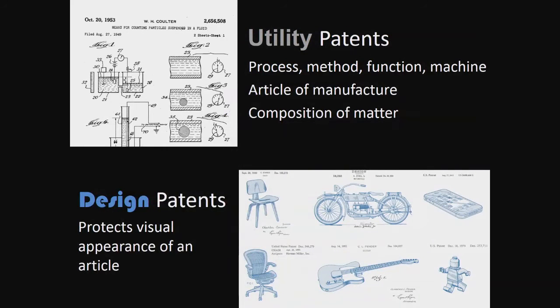I'm going to talk mainly about patents today, not copyrights. There are really two main patent categories. When you think of patents, you're really thinking of the utility one, which covers things like the method of doing something, the manufacturing process, a machine or a mechanism. Those are the ones covered in the utility patent.